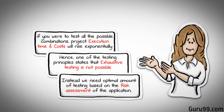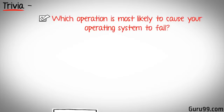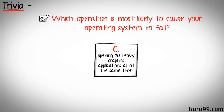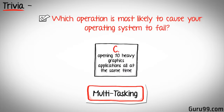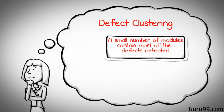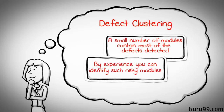The million dollar question is, how do you determine this risk? Consider which operation is most likely to cause your operating system to fail. Most would guess opening 10 heavy graphics applications all at the same time. So if you were testing this operating system, you would realize that defects are likely to be found in a multitasking module, and that needs to be tested thoroughly. This brings us to our next principle: defect clustering, which states that a small number of modules contain most of the defects detected. With experience, you can identify such risky modules.